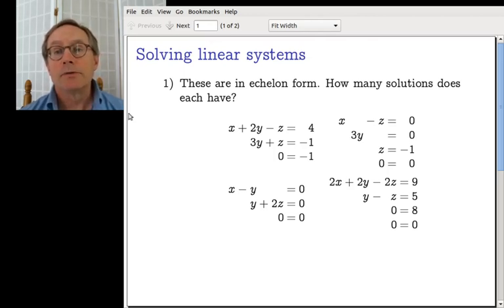All right, so there's four linear systems, one, two, three, four. They're all in echelon form, so a person doesn't have to do the arithmetic. And it simply says, how many solutions does each one have? So for the first one, what do you think? So there is no solution here because zero equals minus one. Anytime there's a contradictory equation, you stop and say no solution.